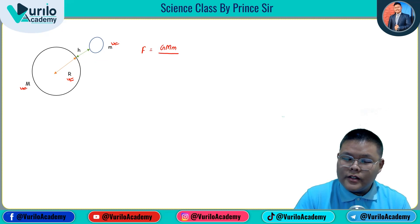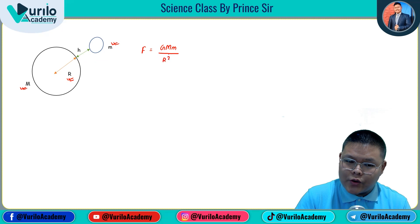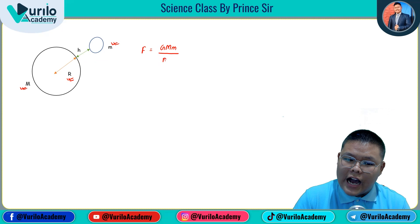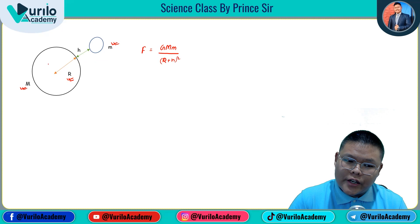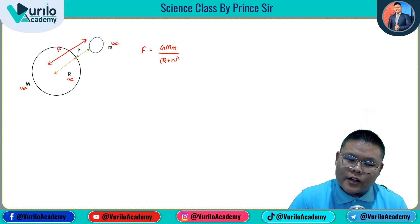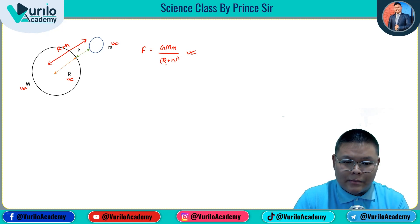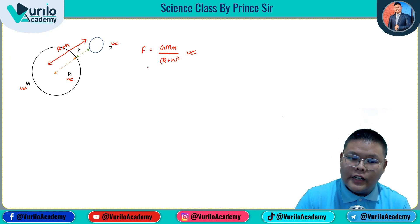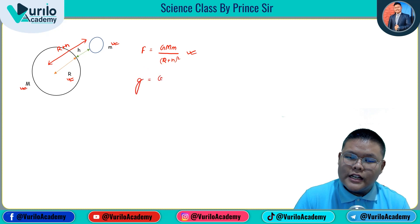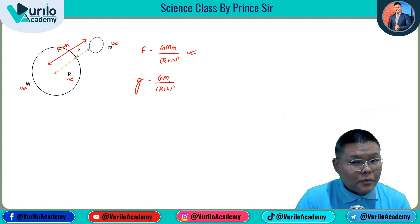We have the formula: capital M upon r squared. Here r squared is the same as (r plus h) squared when the object is at height h above the surface. So the new formula is: F is equal to G capital M upon (r plus h) squared. Here, small m is cancelled out.